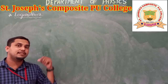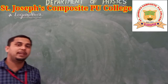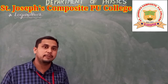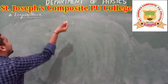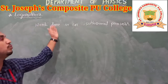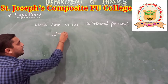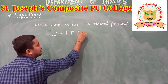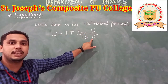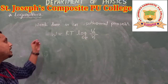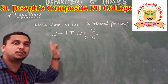This conversion of natural logarithm to common logarithm is used in the thermodynamics chapter, particularly in finding the work done in an isothermal process. We will get the expression: work done equals RT into log of V2 divided by V1 to the base e. Here we apply both the standard formula as well as the conversion from natural logarithm to common logarithm.